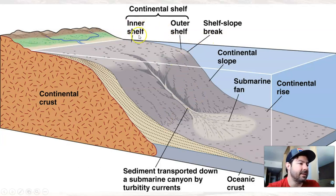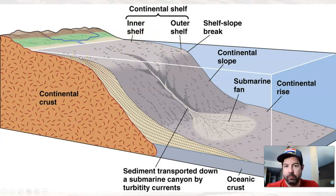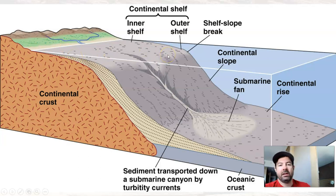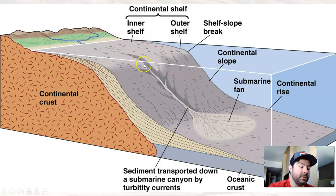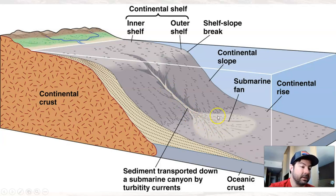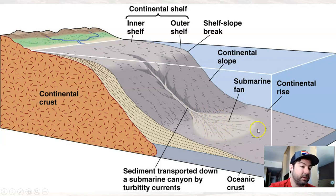So on the continental shelf: the inner shelf receives bigger particles — sands and gravels — deposited in the high-energy environment. The outer shelf gets more silt and clay, but also some sand and coarser-grained material, as well as material coming down submarine canyons via turbidity currents to form submarine fans, which have graded bedding as they spill out onto the continental rise.